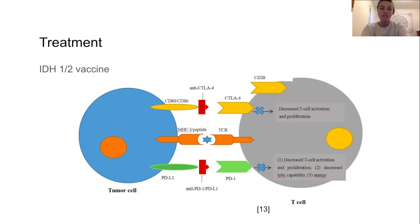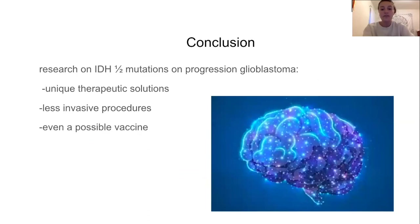While mutations in cancers are often expected to lead to worse outcomes, the mutations in IDH1 and IDH2 seem to have a slowing effect on tumor growth and allow for treatments specifically targeting their molecular pathways. Research on the effects of IDH1 and IDH2 mutations on the progression of glioblastoma will hopefully lead to new treatment plans involving less invasive procedures, such as small molecule inhibitors, targeted gene therapy, and even a possible vaccine.